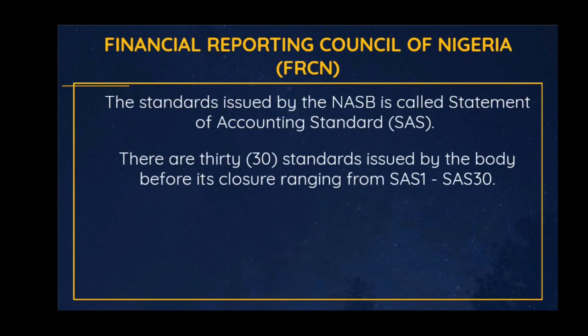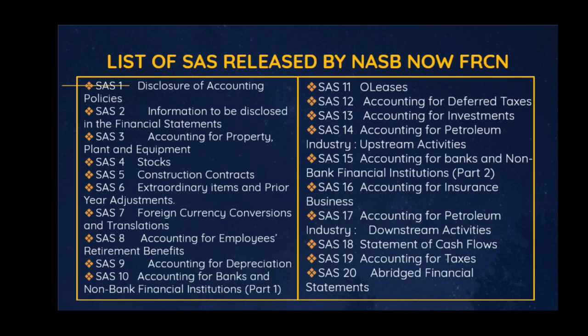The standards issued by the NASB before the adoption of IFRS are called Statements of Accounting Standards (SAS). A total of 30 standards were released — SAS 1 to SAS 30. Let's quickly look at the list of accounting standards released by the Nigeria Accounting Standard Board. These include: SAS 1 Disclosure of Accounting Policies, SAS 2 Information to be Disclosed in Financial Statements, SAS 3 Accounting for Property, Plants and Equipment.